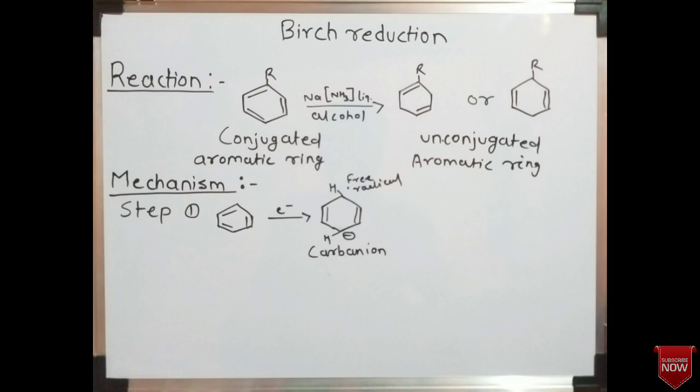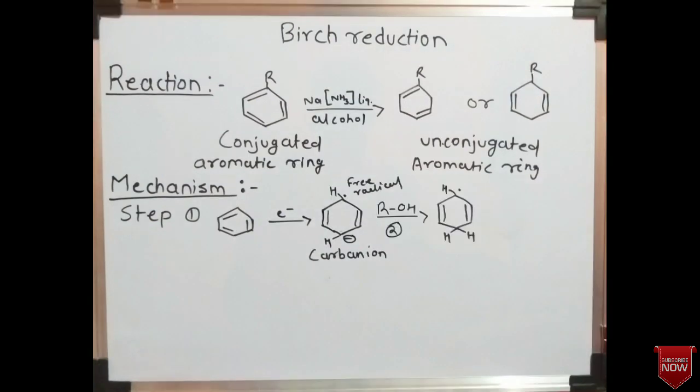Also formed is a carbanion — meaning a negative charge present on a carbon atom. In the second step, the alcohol donates one proton, that hydrogen atom, to the ring. The carbanion accepts that proton, leading to the formation of a CH2 group, as we can see in this reaction.